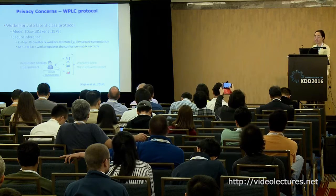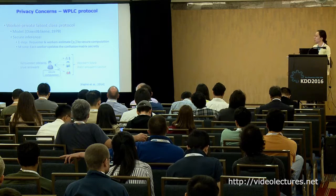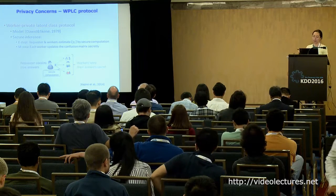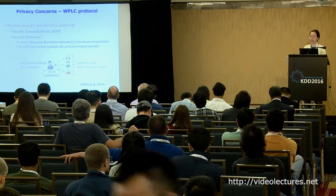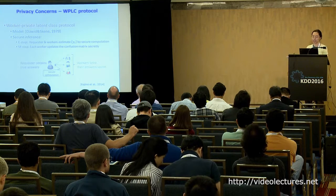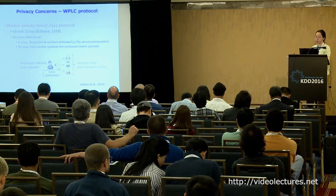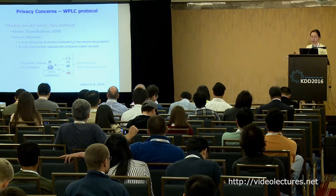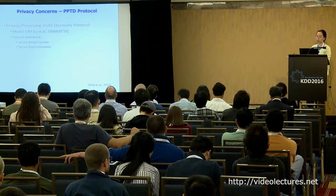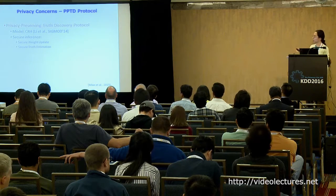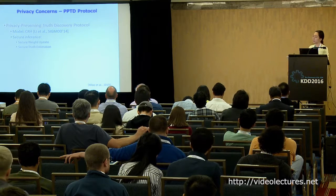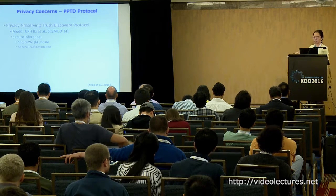In the E-step, the requester and worker estimate the truth by secure computation. In the M-step, the worker updates the confusion matrix secretly. Another protocol called PPTD is built upon the CRH model from SIGMOD 2014. Secure inference occurs at both the weight update and truth estimation steps as introduced earlier.